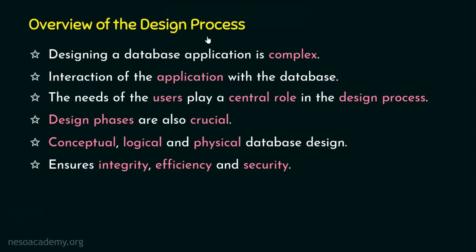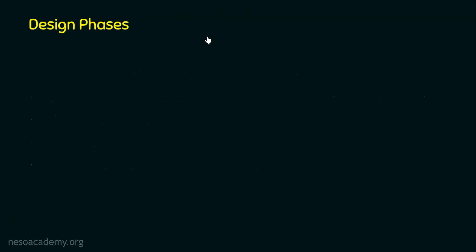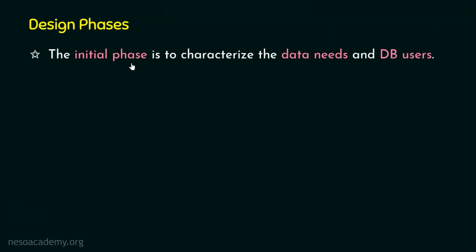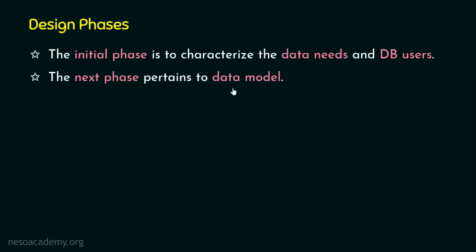The database design phases include four phases. The first, initial phase is to characterize the data needs and database users — what types of data will be stored, and which users can access what data. The second phase involves choosing the data model. For more information on data models, refer to chapter one of this lecture series.